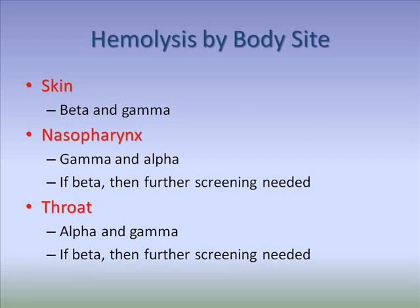In terms of normal flora, the types of hemolysis that are commonly found differs depending on the body site. For skin, beta hemolysis — mainly due to Staphylococcus aureus — and gamma hemolysis — mainly due to non-aureus staphylococci, micrococci, and others — is considered normal flora.